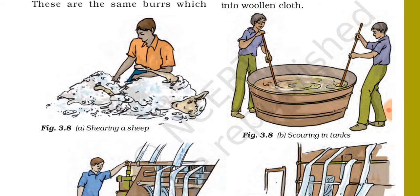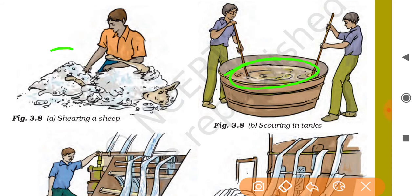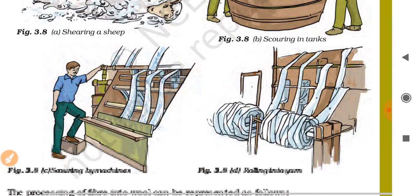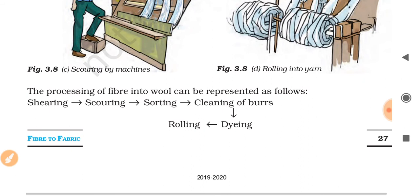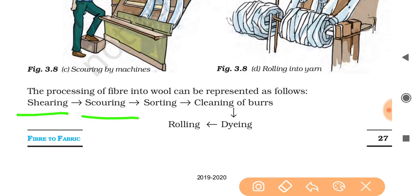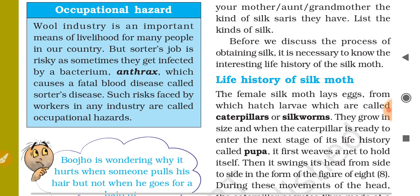The longer fibers are made into wool for sweaters and the shorter fibers are spun and woven into woolen clothes. So the process of converting fibers into wool follows these steps: shearing, then scouring, then sorting, then cleaning of burrs or dyeing, then rolling into yarn. I hope you understood. If you find any difficulty, you can ask. We will move to the next topic in the next class. Thank you.